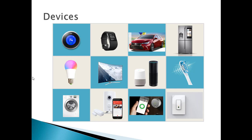IoT devices could be refrigerators, TVs, cars, light bulbs, fans — anything that could be set up with a wireless connection. Due to the ability to embed electronics into almost anything, it's possible to connect to a vast number of devices.